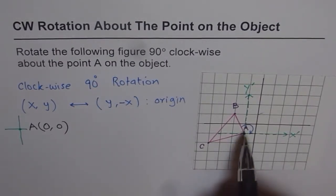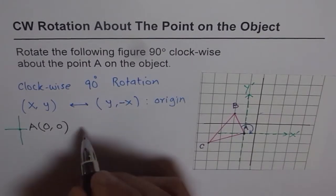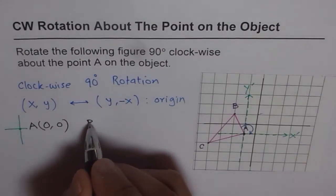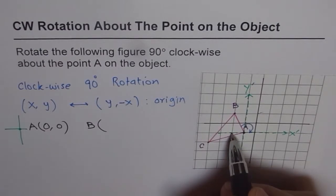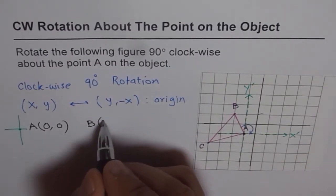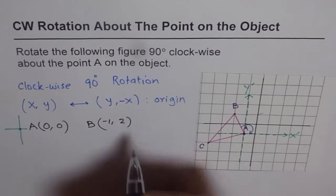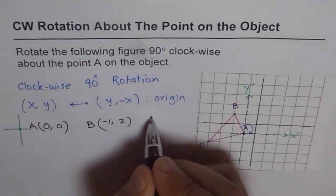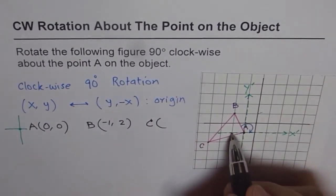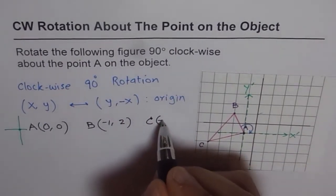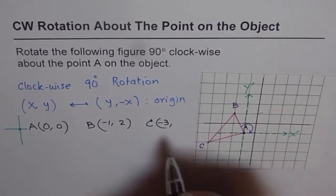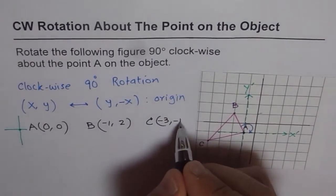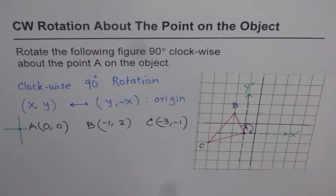A in the new axis is at the origin (0, 0). For B, it is one unit left (−1) and two units up (+2), so B = (−1, +2). For C, it is three units left (−3) and one unit down (−1), so C = (−3, −1).